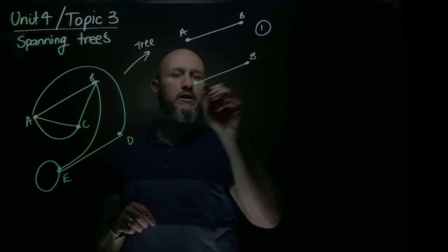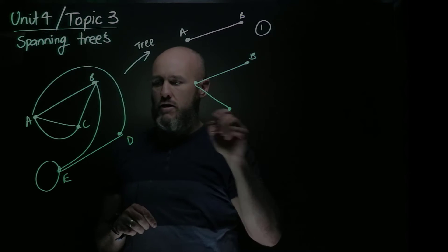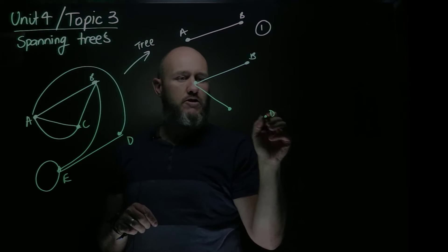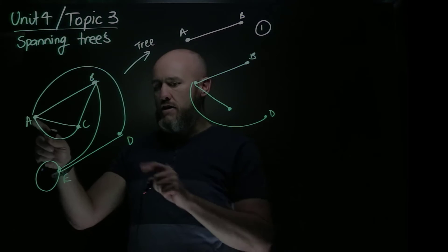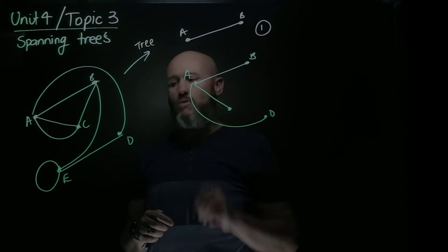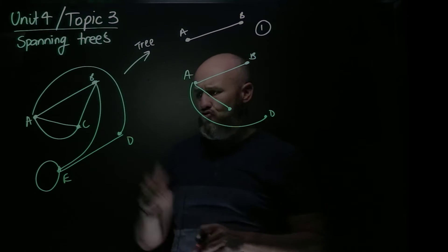A, B, C, and D. A is connected to D around this way. I've just hooked around the other way. That's another one. So there's heaps of different examples of trees in here.